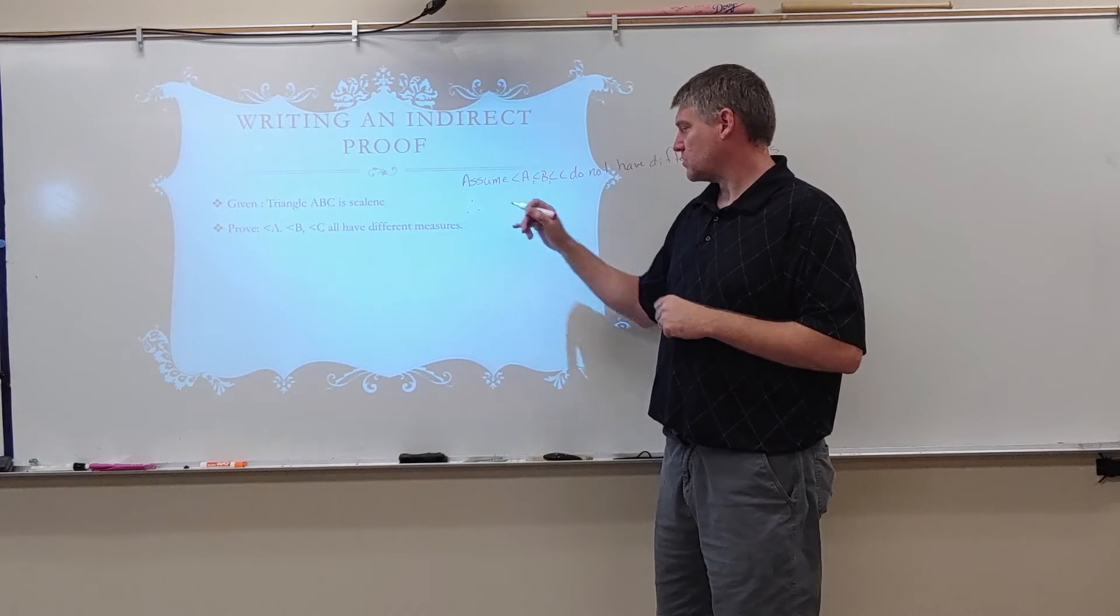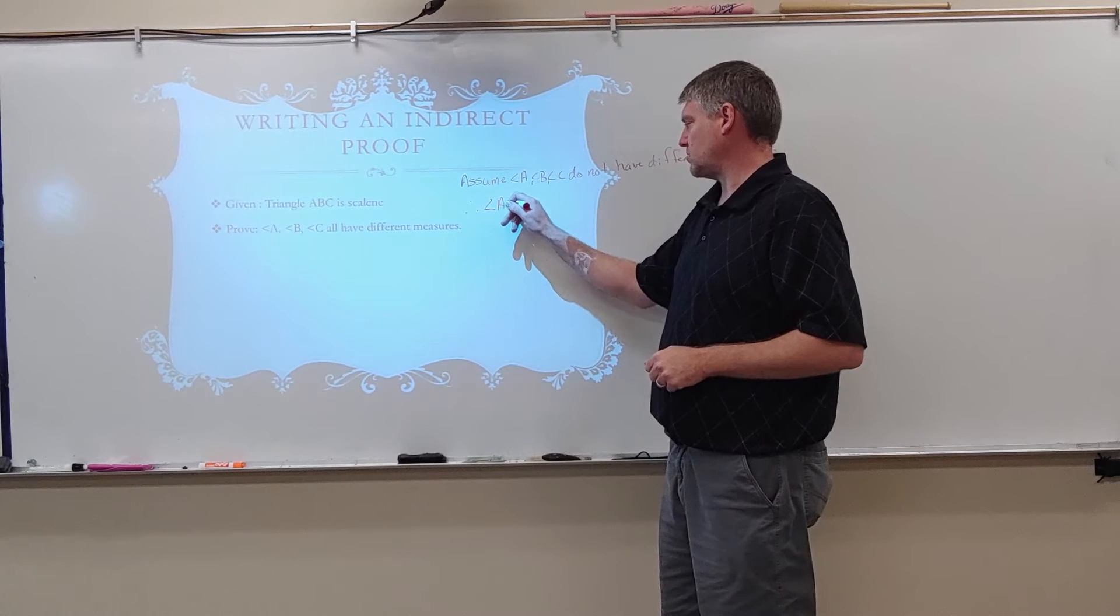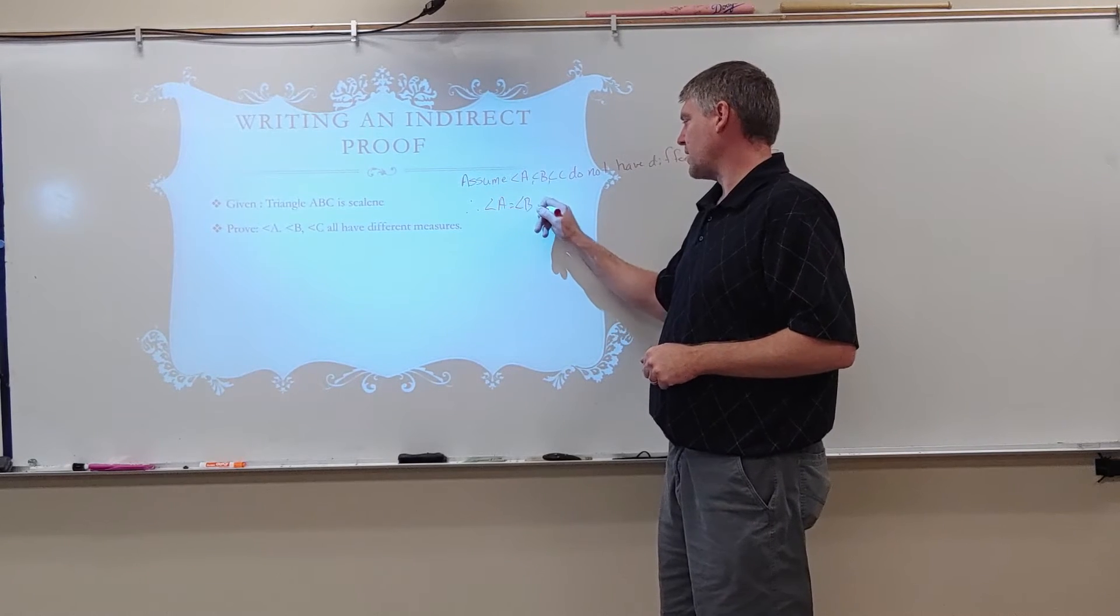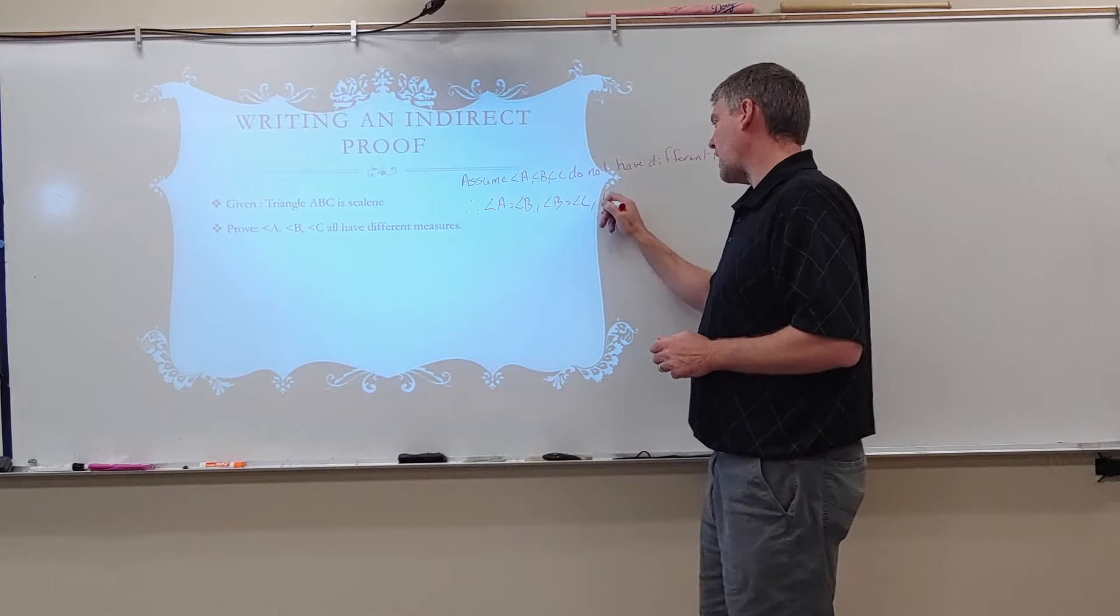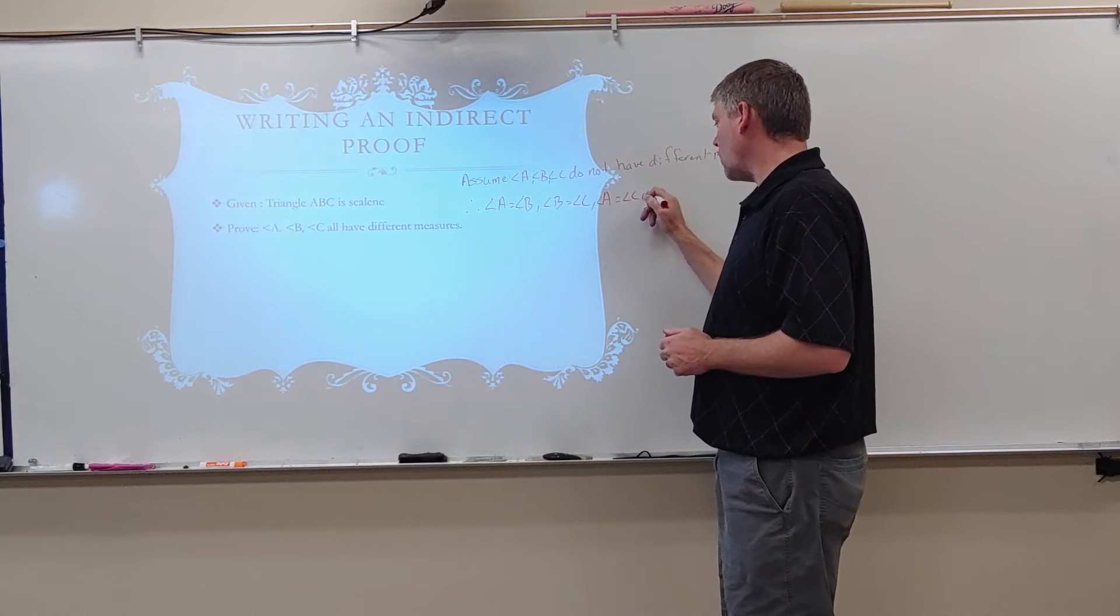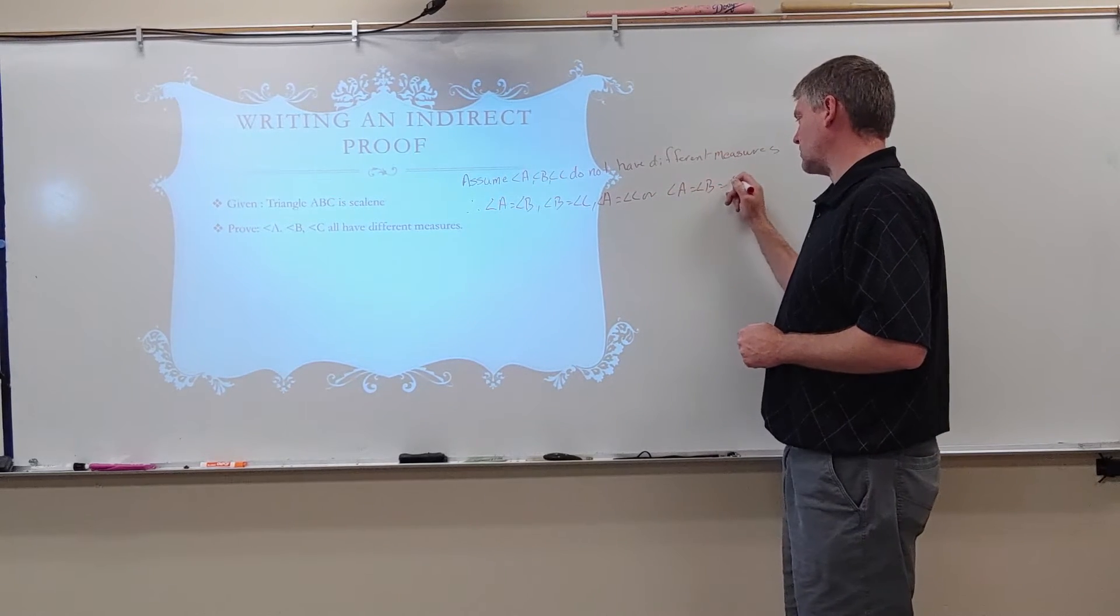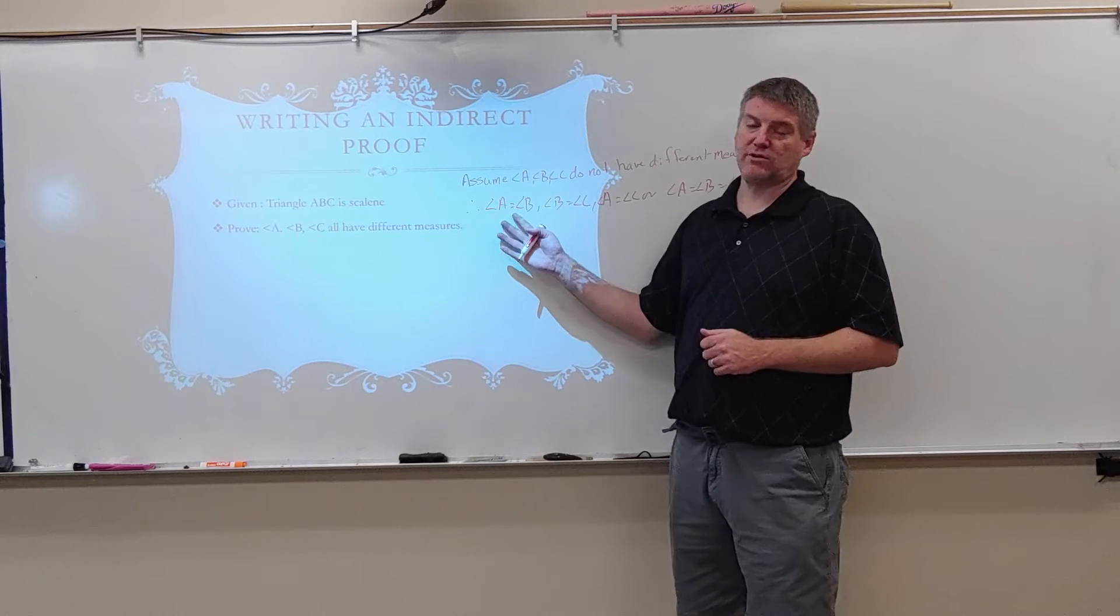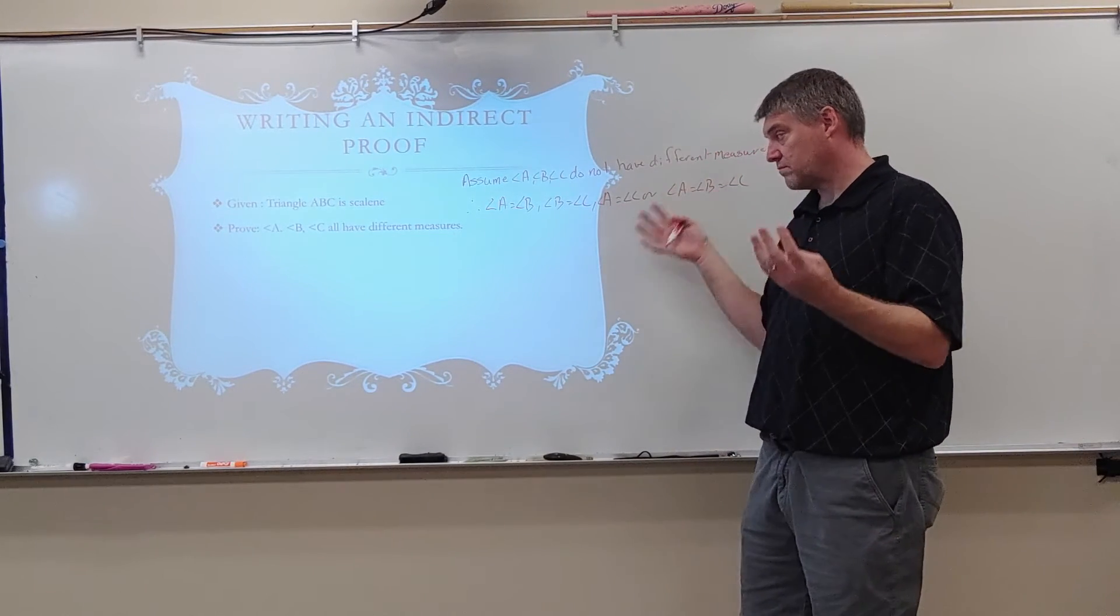So the next thing is, therefore, what's going to happen is angle A equals angle B, angle B equals angle C, angle A equals angle C, or angle A equals angle B equals angle C. So I might have two of the angles that are equal. A equals B, B equals C, A equals C.